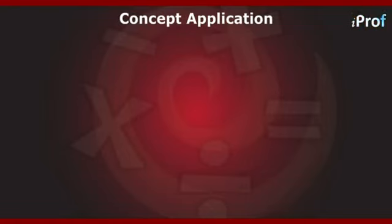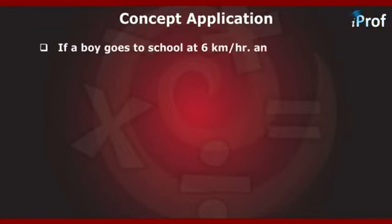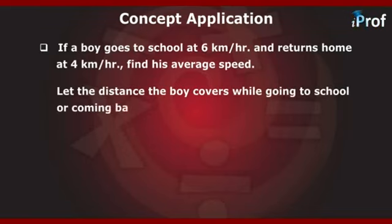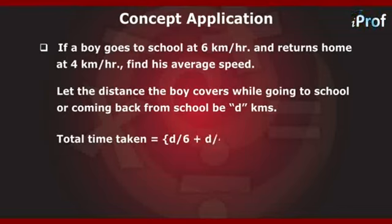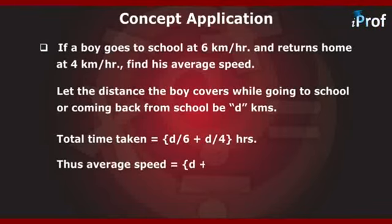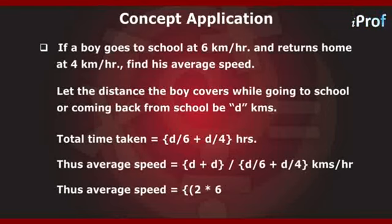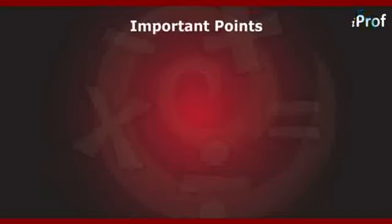Let us apply this concept. If a boy goes to school at 6 km/h and returns home at 4 km/h, find his average speed. Let the distance be d kilometers. The total time taken is d/6 + d/4 hours. Thus average speed equals 2d divided by (d/6 + d/4), which simplifies to 2 × 6 × 4 / (6 + 4), giving 4.8 km/h.